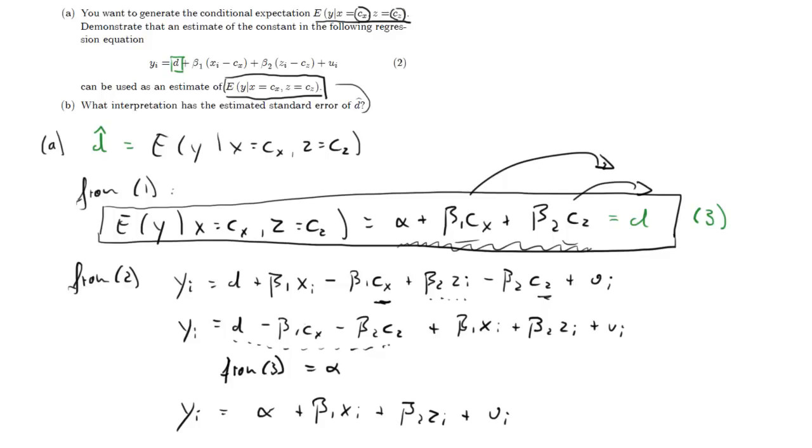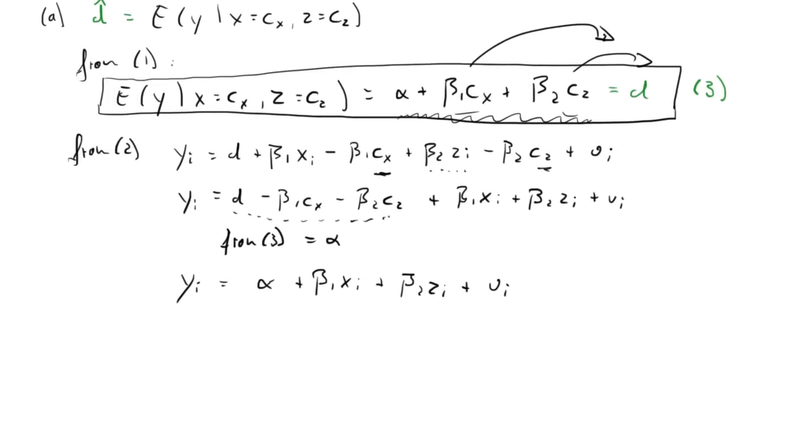So this is in fact the second question here, part b of the question. It asks what interpretation does the standard error of d hat have? So basically just to make sure what the d is, the d hat is going to be the same as our expected value of y given cx and cz, x being equal cx and z being equal to cz. So the variance of d hat, we get that from an OLS regression of equation two.